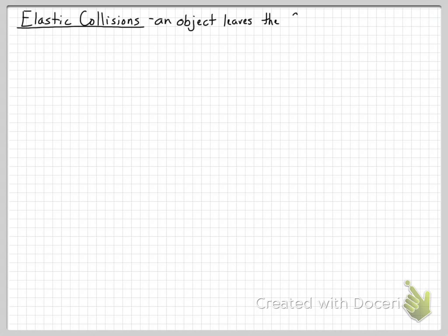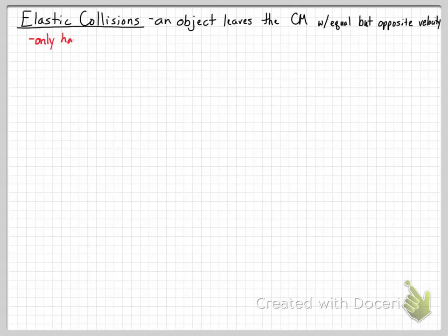An elastic collision is when an object leaves the collision and therefore leaves the center of mass — which is located in the middle between the two objects when we draw our picture — with equal magnitude but opposite direction as far as velocity is concerned. You will only solve problems for elastic collisions when the problem says it's elastic, because most collisions are inelastic or completely inelastic. So only solve elastic problems in this way when you are told that they are elastic.